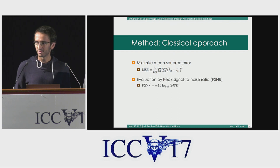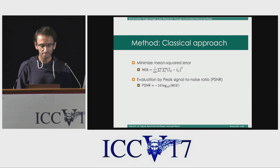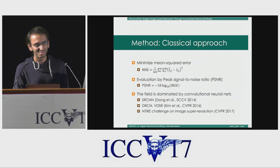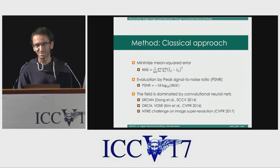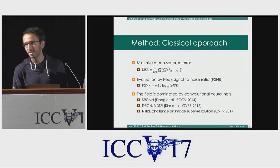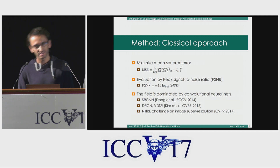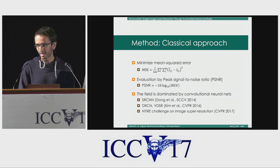To evaluate the performance of single image super resolution models, we look at PSNR scores. This is just a rescaling of the mean squared error. Like most fields in image processing, single image super resolution has been dominated by ConvNets in recent years. SRCNN in 2014 was the first work which applied neural networks to super resolution successfully, and then people have been using deeper nets and more sophisticated architectures to get higher and higher PSNR scores.